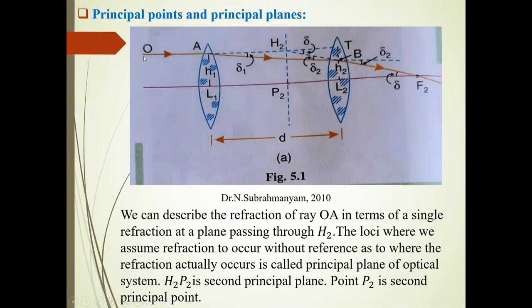If we extend this OA incident ray in forward direction, and if we extend this emergent ray BF2 in backward direction, these two rays meet at the H2 point.